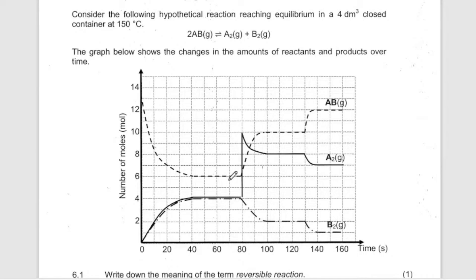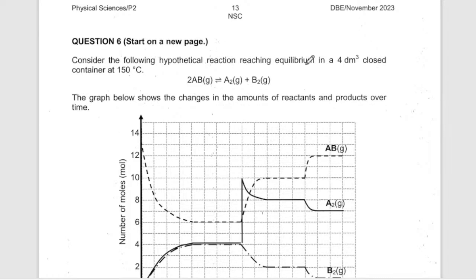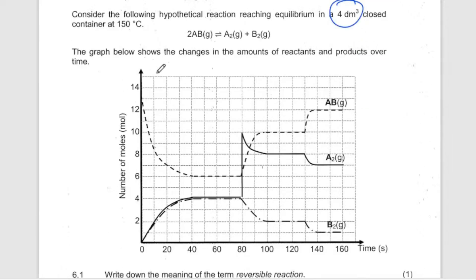I think chemical equilibrium was very simple and easy to interpret. Those people who watched my prediction — I gave you a question which is almost exactly the same. Let's look at it: consider this hypothetical reaction in a closed container system. The graph below shows the change in the amount of reactant and product over time.